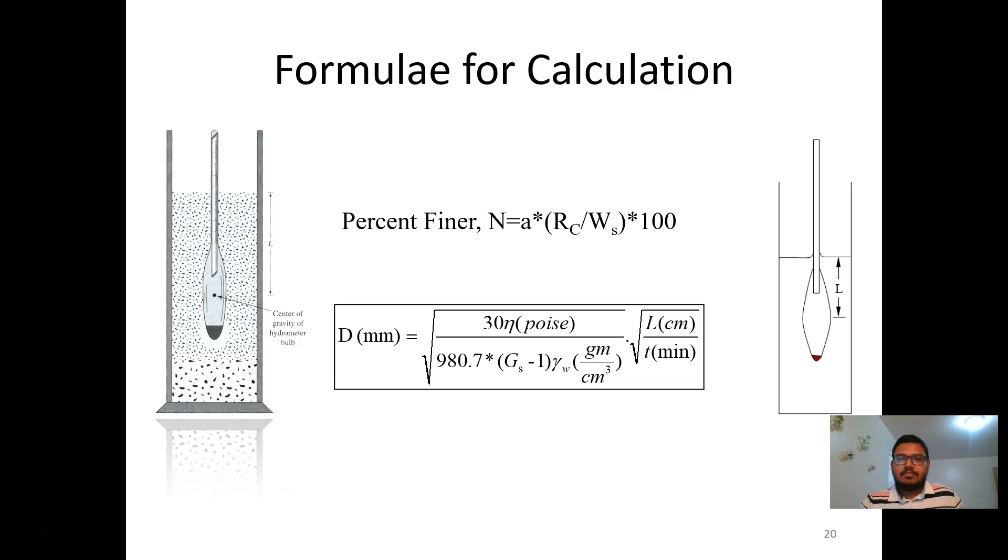Let's discuss the calculation procedure. The following formulas are used for the data analysis. Percent finer, that means percent finer N, and particle size diameter D can be obtained from the hydrometer readings.